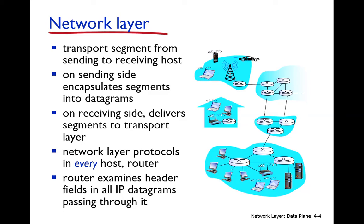In the TCP/IP protocol model we have five layers: application, transport, network, data link, and physical. We have already discussed the application and transport layers. The basic functionality of the network layer is to transport segments from the sending host to the receiving host — to deliver data from the source machine to the destination machine. Since there are multiple routes between source and destination, the network layer must determine which one to use.